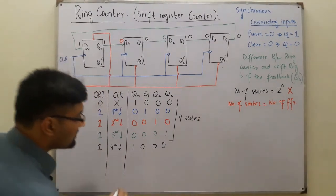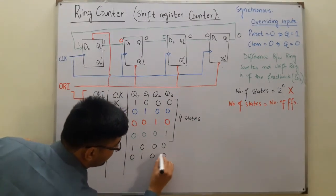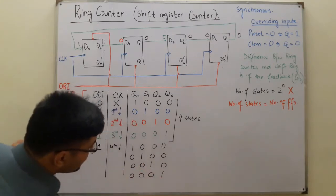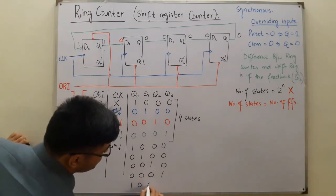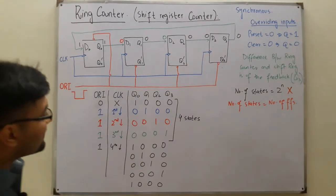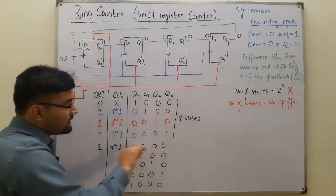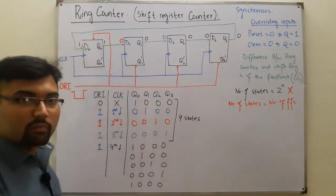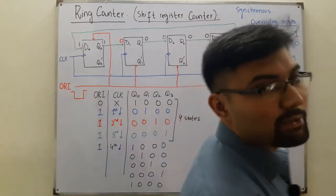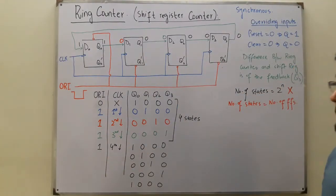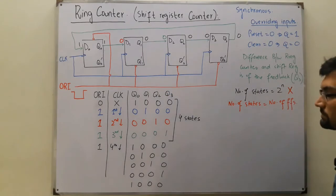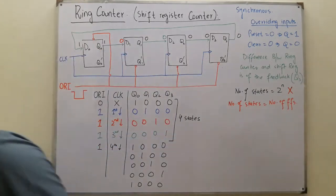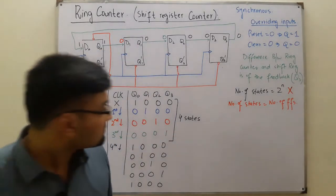After these four states the sequence repeats: 1000 → 0100 → 0010 → 0001 → 1000, and so on. It moves in a circle — that's why it's called a ring counter. It's also called a shift register counter because it has similarities to a shift register.